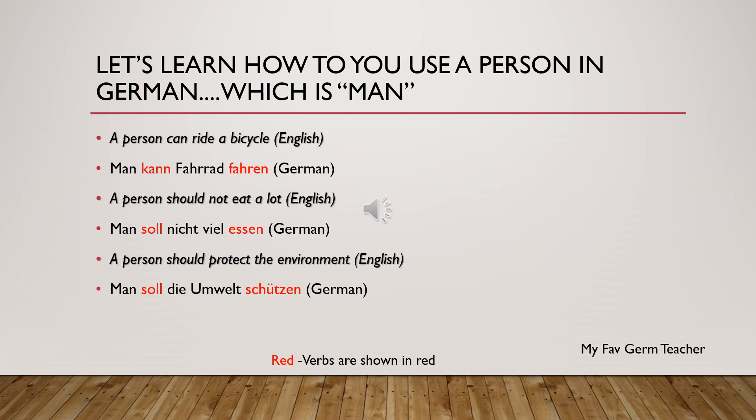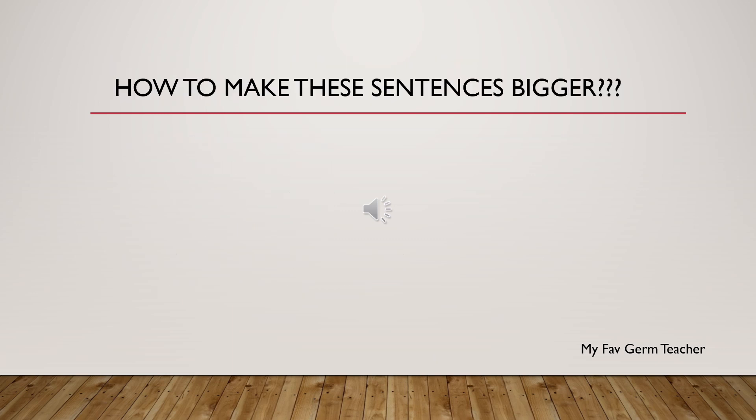So 'man' means 'a person'. A person can ride a bicycle — in German: 'Man kann Fahrrad fahren'. A person should not eat a lot — 'Man soll nicht viel essen'. A person should protect the environment — 'Man soll die Umwelt schützen'.